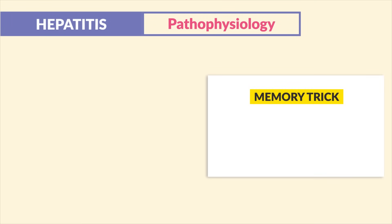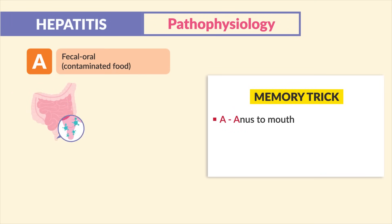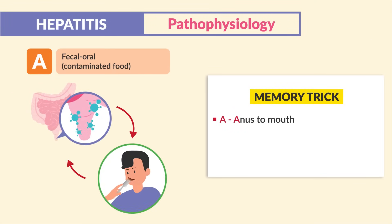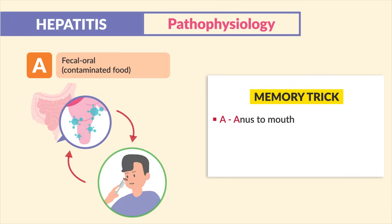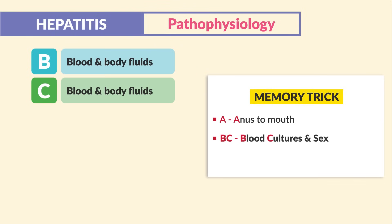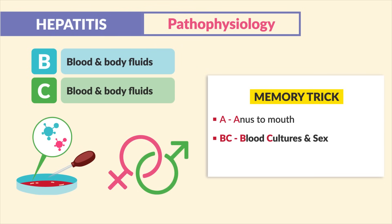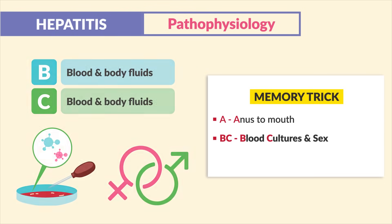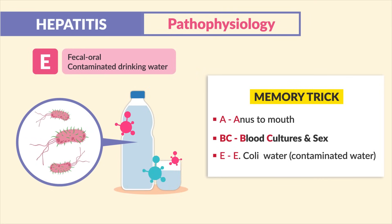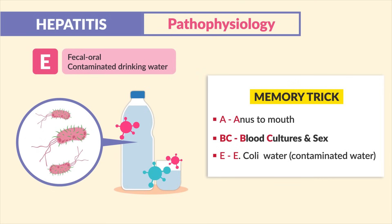Memory tricks for exams: for hepatitis A, think 'anus to mouth.' For hepatitis B and C, think 'blood, cultures, sex.' For E, think 'E. coli in the water' from contaminated drinking water.